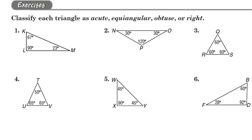Hello everybody, and welcome to assignment Q. We're going to do the first page, which is on page 183. The directions say to classify each triangle as acute, equiangular, obtuse, or right.